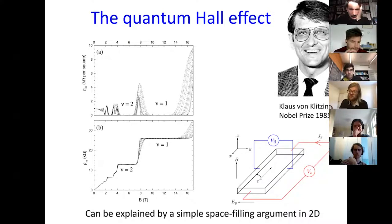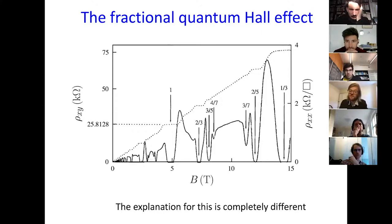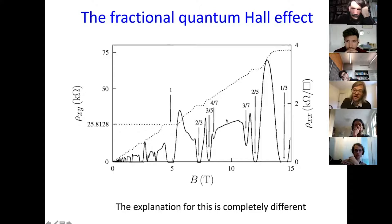If we increase the field even further in even purer samples at even lower temperatures, we get new steps in the Hall effect at fractional fillings — one-third, two-fifths — rational fractions usually with odd denominators. This is the fractional quantum Hall effect, and its explanation is completely different.